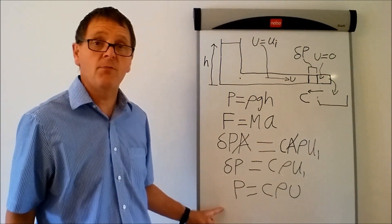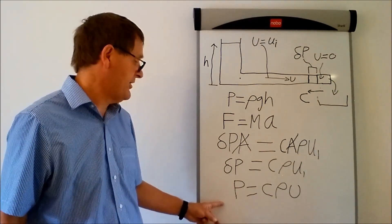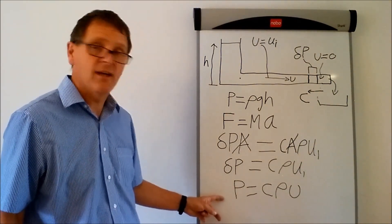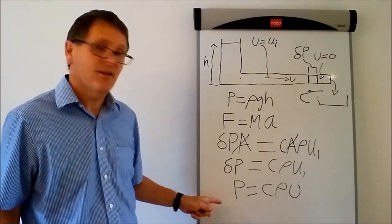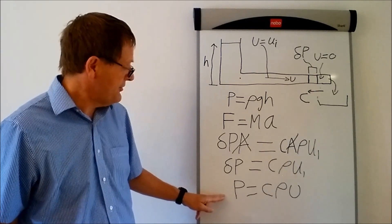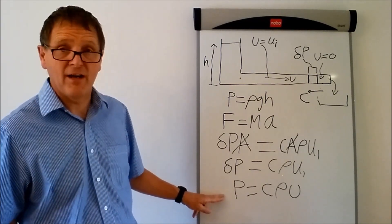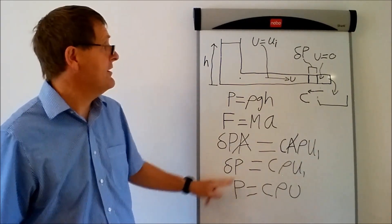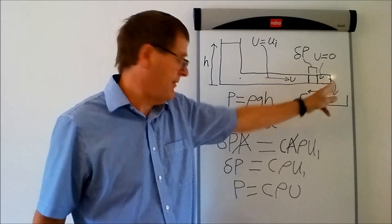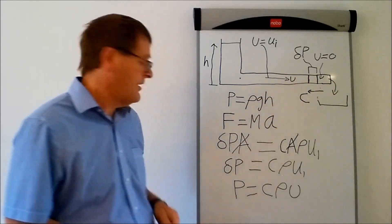That's quite a famous formula — it's called the Joukowsky equation. And that is what determines the maximum pressure rise when you get a sudden closure of a pipeline system.